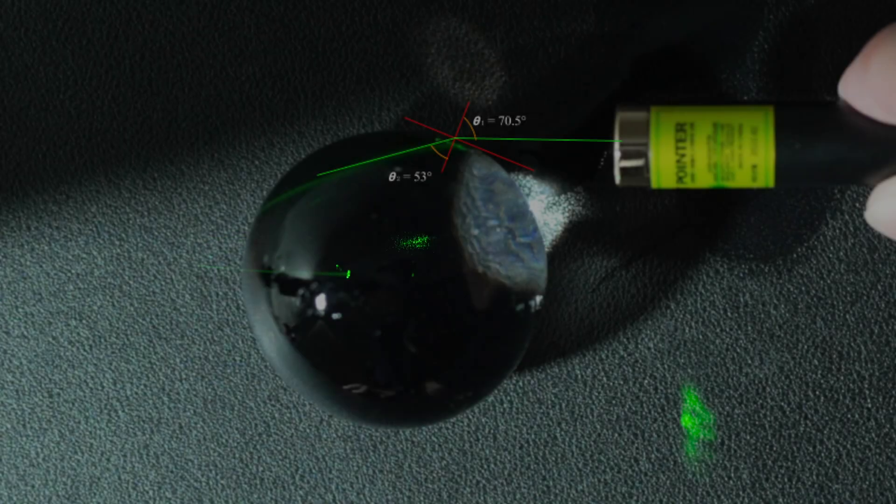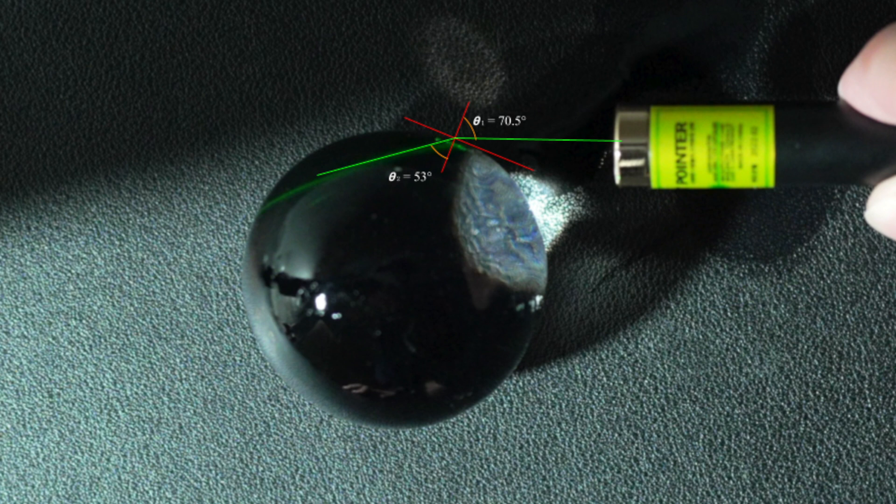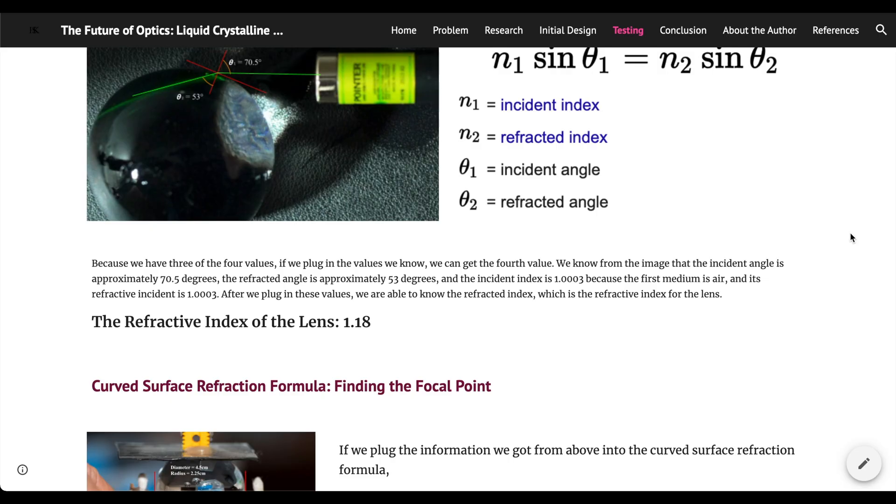This means that if we plug in the values we know, we can get the fourth value. We know from the image that the incident angle is approximately 70.5 degrees, the refractive angle is approximately 53 degrees, and the incident index is 1.0003 because the first medium is air, and its refractive index is 1.0003. After we plug in these values, we are able to know the refractive index of the lens, which is 1.18.